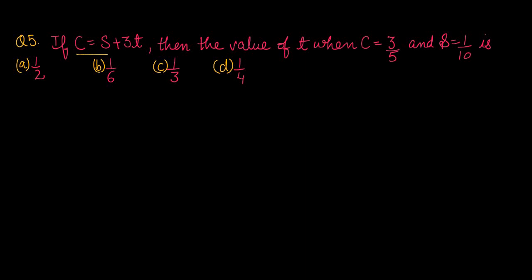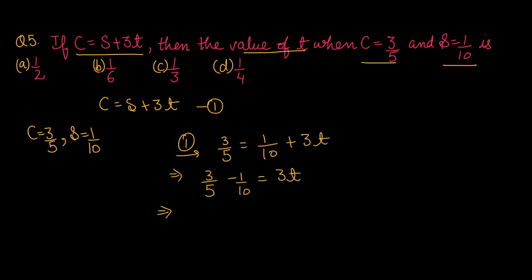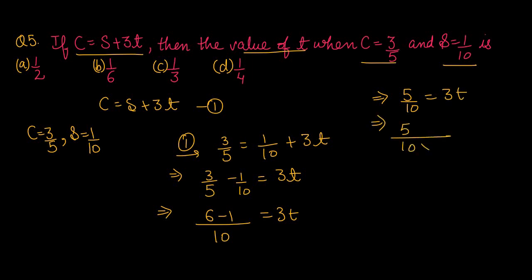Question number 5: if c equals to s plus 3t, then the value of t? c की value 3 by 5 और s की value 1 by 10 दे रखी है। इन values को first equation में fit out करते हैं: 3 upon 5 equals to 1 upon 10 plus 3t। LCM लेने पर: 6 minus 1 equals to 3t, यानी 5 upon 10 equals to 3t। Simplify करने पर t की value आगई 1 by 6। Option number B is the right one.